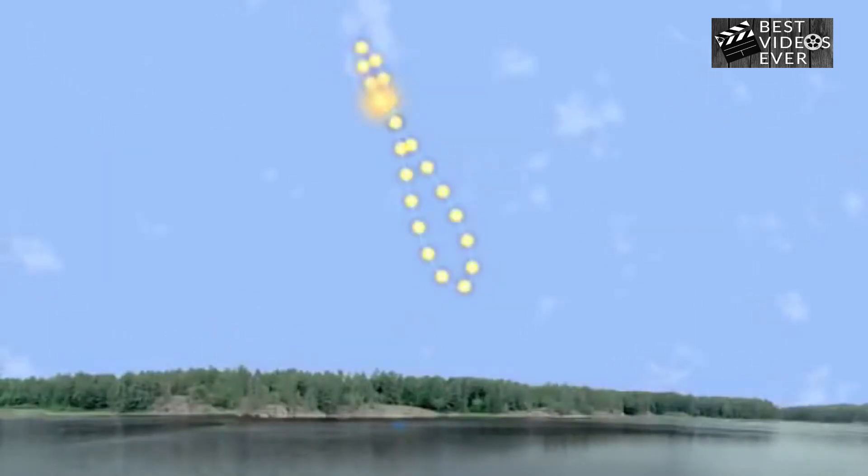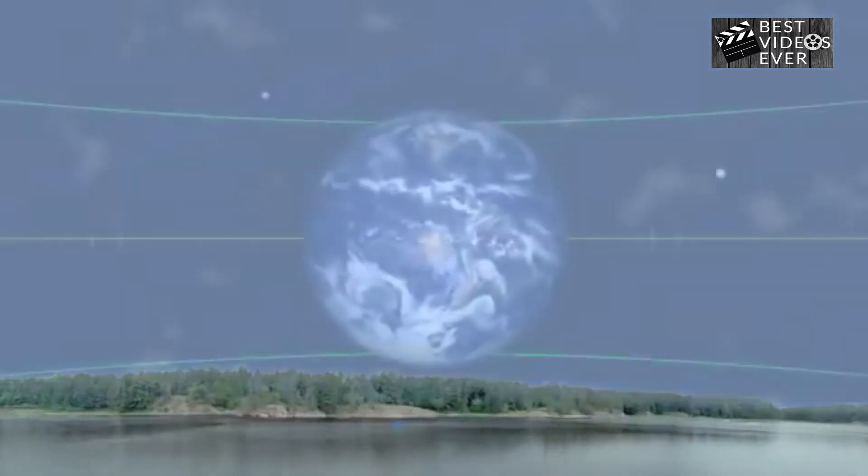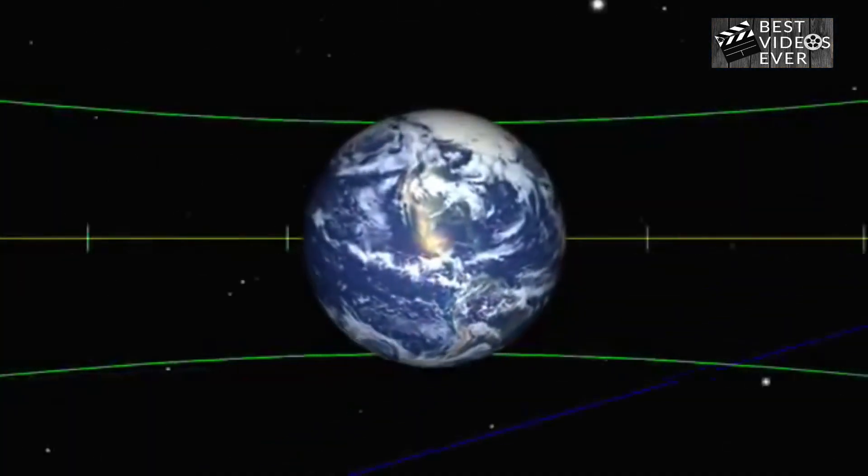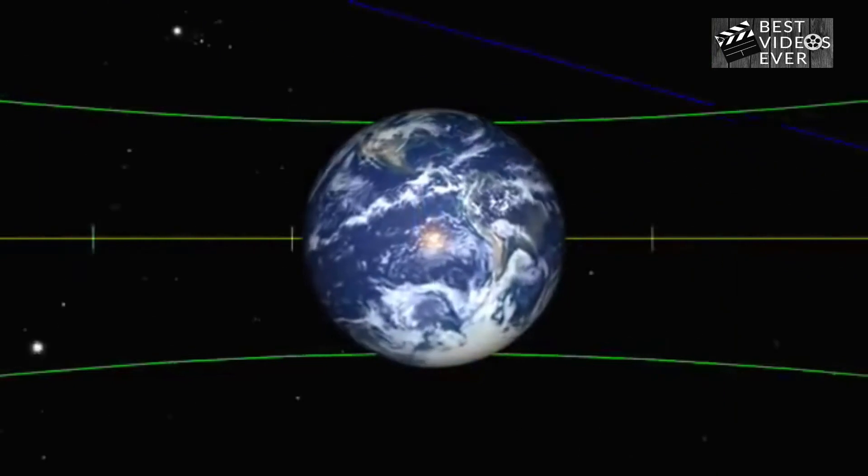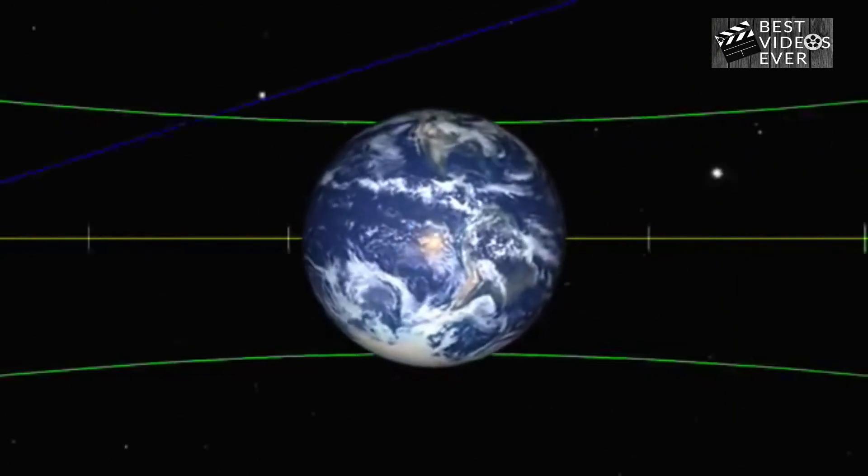When the Sun goes from one vernal equinox to the next, a tropical year has passed. Measuring this way gives a year that is 365 days, 5 hours, 48 minutes, and 46 seconds long.